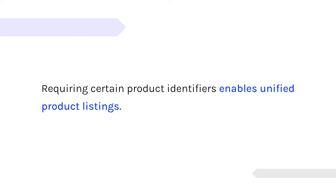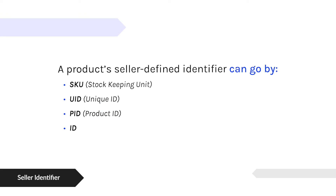We're going to go over the different types of product identifiers. The first one is the most common or most identifiable by the seller because they typically create their own identifier for their own catalog. It's often called SKU, which stands for stock keeping unit. Sometimes it's called a unique ID, a product ID, or just simply ID.